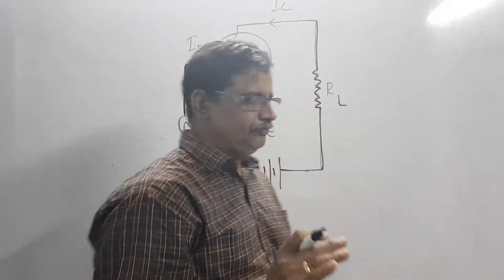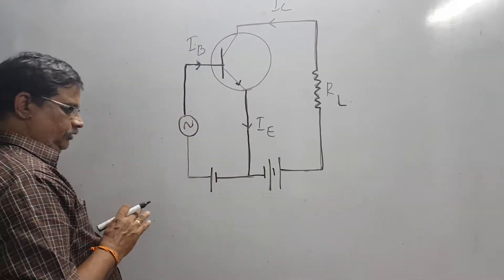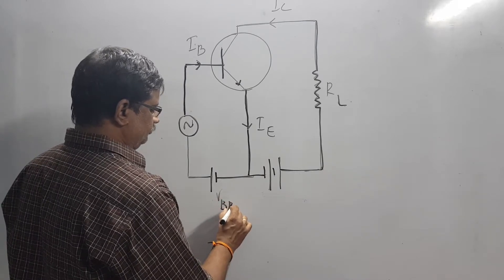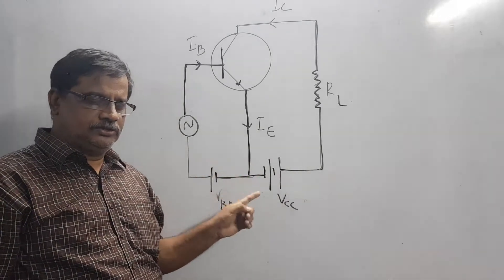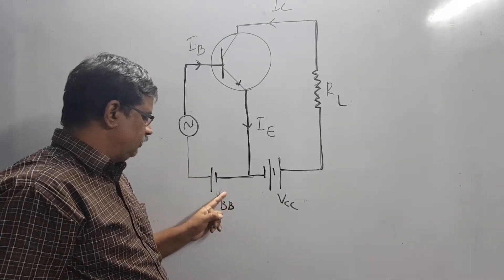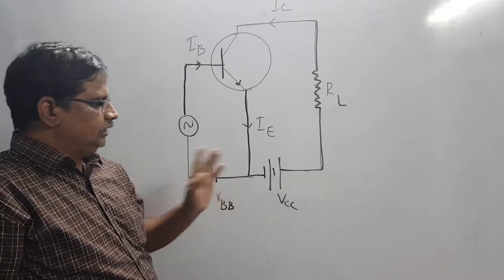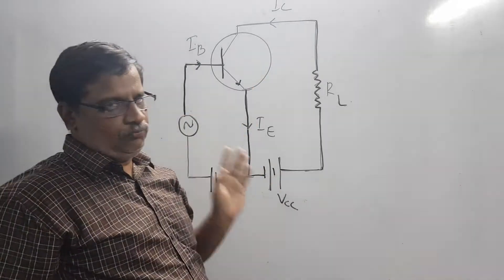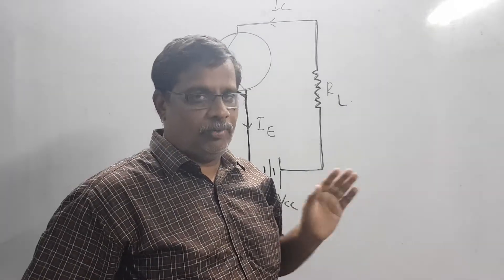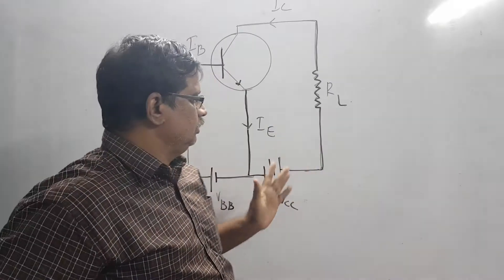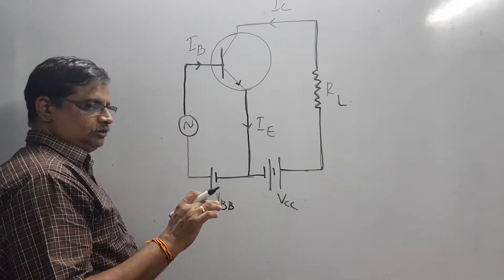Now let us see how the transistor amplifies. I have connected two DC sources — one at the input and one at the output. The duty of one DC source is to ensure that the base-emitter junction is always properly forward biased, and the duty of the other is to ensure that the collector-emitter junction is properly reverse biased. These two cells make sure the input and output circuits are properly biased.